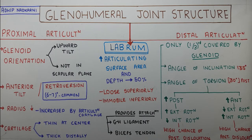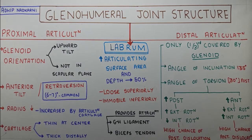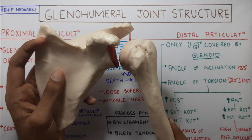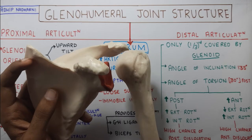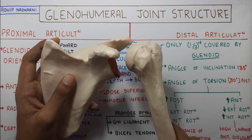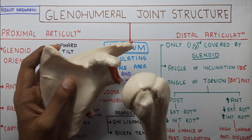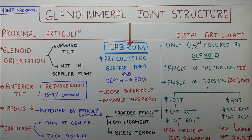This varies from person to person. If there is increased posterior torsion, anatomically this allows your shoulder joint to go into more external rotation and less internal rotation, leading to higher chances of posterior dislocation of the shoulder joint. Whereas if there is increased anterior torsion, there is reduced external rotation but increased internal rotation, increasing chances of anterior dislocation. The higher chances of posterior dislocation are commonly seen in throwing athletes, who tend to have humeri with more posterior torsion - this can be an adaptation formed in these athletes.